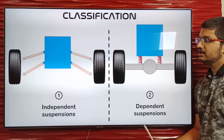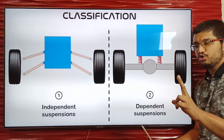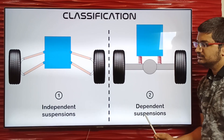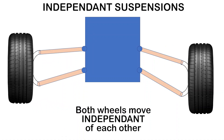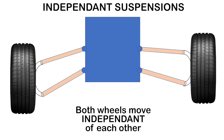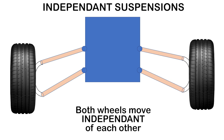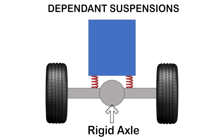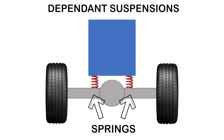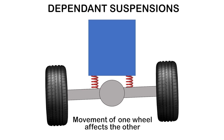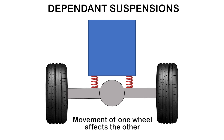These three main components are arranged in different configurations to make the overall suspension subsystem. The suspension subsystem is broadly classified into two groups: independent suspensions and dependent suspensions. In independent suspensions, both wheels are connected independently to the frame, so one wheel can move without disturbing the other. In dependent suspensions, the wheels are attached to a rigid axle connected to the vehicle body by two springs, so the movement of one wheel impacts the other.